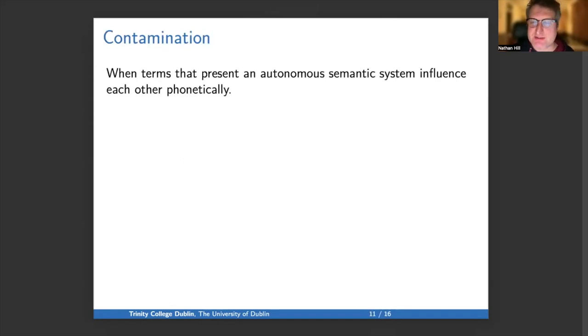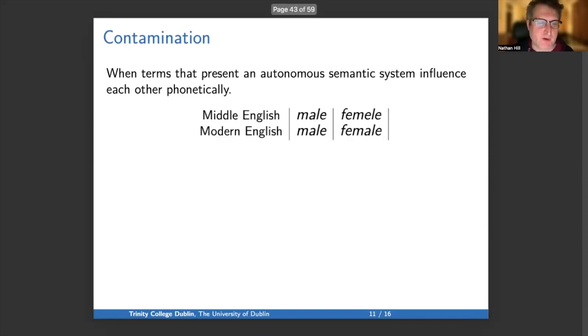When terms that present an autonomous semantic system influence each other phonetically, that's what we call contamination. Giving the most famous example, Middle English had two adjectives borrowed from French: male and femelle, from male and femelle in French. But in modern English, the form female has been changed to look more like the form male, the form of male changing femelle into female because of their closely associated meaning. That's what we call contamination.